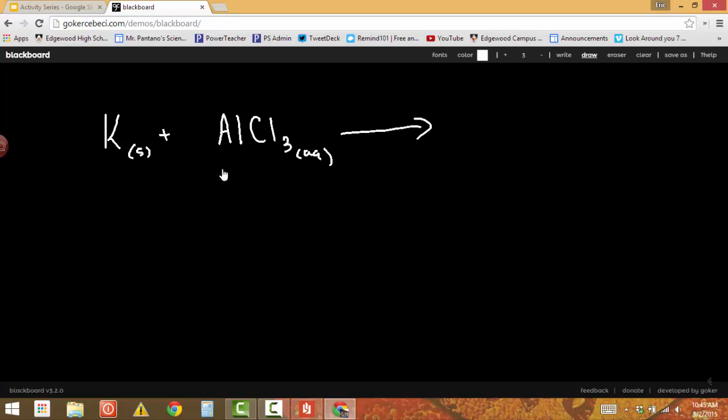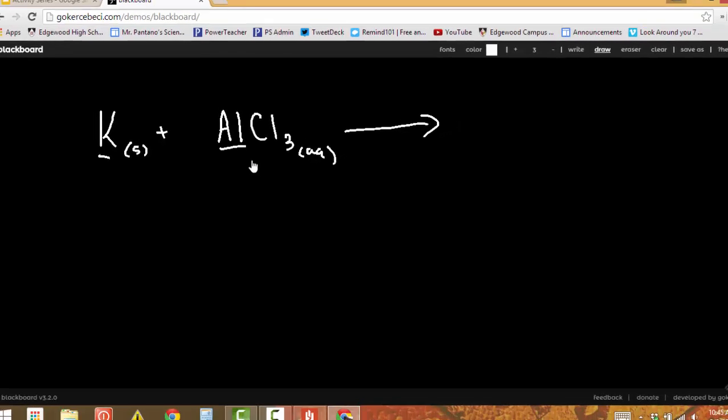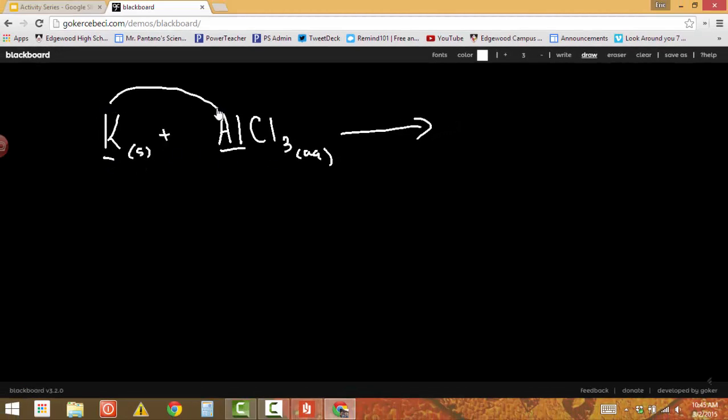This is a single displacement reaction because I have a single element and a compound. The single element, the potassium, will replace the similar element in the compound, which is the aluminum. Potassium will replace aluminum if and only if potassium is more reactive. We need to go back to our activity series and look. Potassium is up top and aluminum is below it. That means potassium is more reactive, which means potassium will replace aluminum.